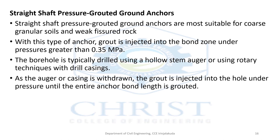The second type is straight shaft pressure grouted ground anchors, where we provide certain pressure during grouting. These are more suitable for coarse granular soils and weak fissured rock. With this type of anchor, grout is injected into the bond zone under pressures greater than 0.35 MPa. For introducing the borehole, a hollow stem auger or rotary techniques are used. As the auger casing is withdrawn, the grout is injected under pressure until the entire anchor bond length is grouted.